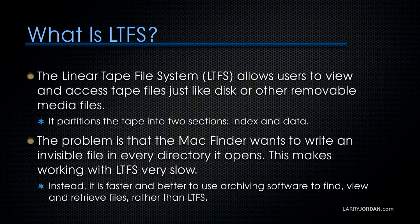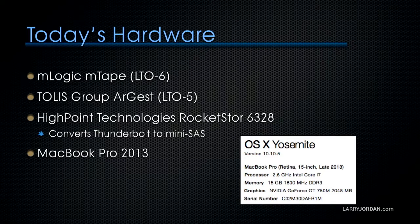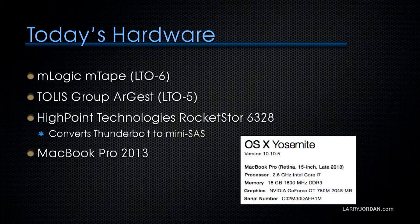Today I've got a whole bunch of different hardware to show you. We're showing the mLogic mTape, which is an LTO6 drive; the Tollis Group's archive unit, which is an LTO5 drive; and a HighPoint Technologies Rocket Store 6328, which converts Thunderbolt to Mini SAS.